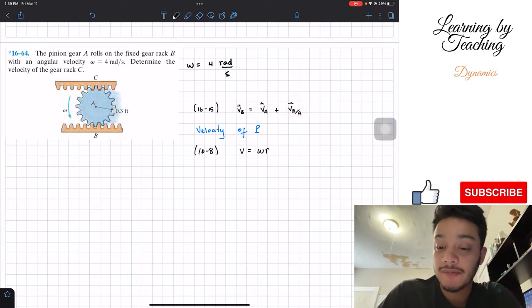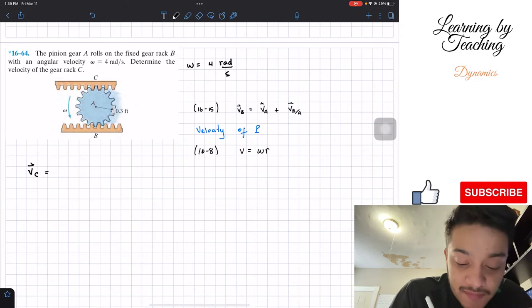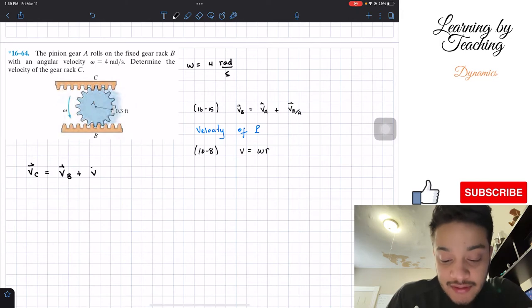We're going to do a very similar approach, where we have that the velocity of C is going to be equal to the velocity of B, plus the relative velocity of C with respect to B.